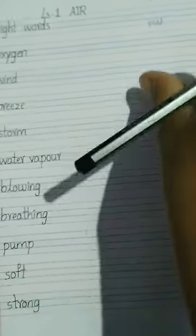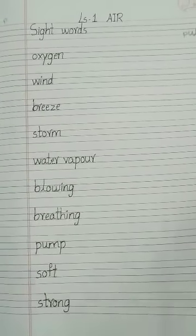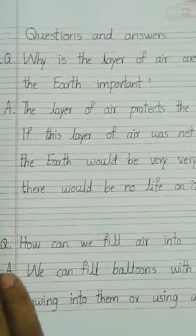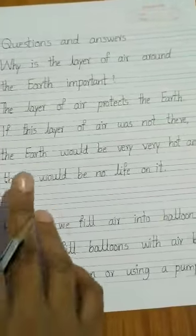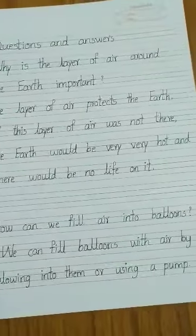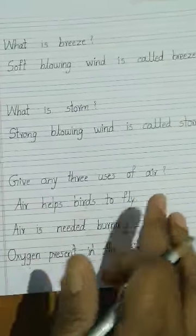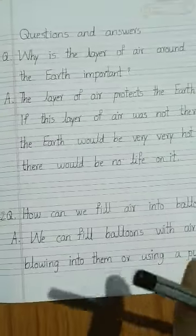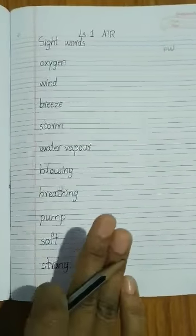Children, you have to do one thing — draw a margin in the middle and write here 'practice work.' Write all these hard words and learn the spellings. Every spelling is very important. Learn all the spellings. Move to the next page. Tomorrow I will send these two question answers: Why is the layer of air around the earth important? How can we fill air into the balloons? And the remaining three questions for the next day: What is breeze? What is storm? Give any three uses of air. These are all five question answers from your textbook, and I will send them in the WhatsApp group. Today you only have to write the hard words and learn the spellings. Bye.